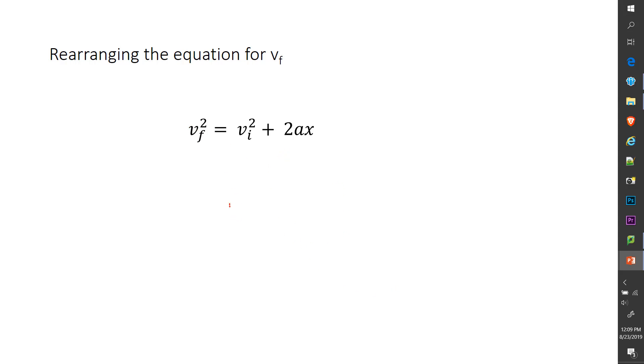And if I was trying to solve this for VF, this should be a given. This is what I did in our video. Take the square root of both sides. Take the square root of both sides. And then that gets rid of the squared. And I get square root of everything VI squared plus 2Ax. And that's it.